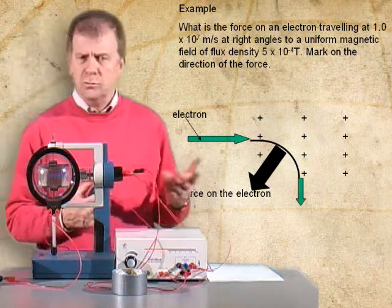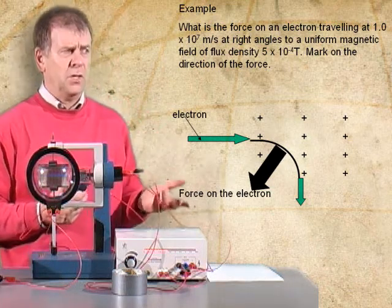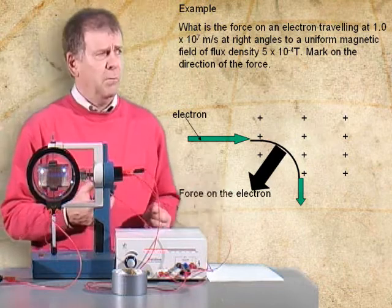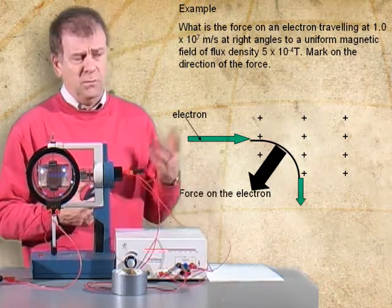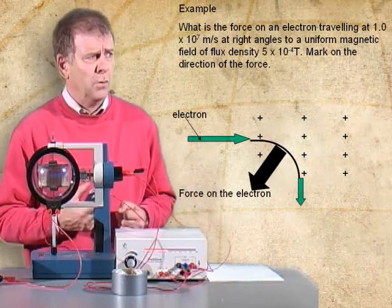So we have an electron travelling at 1 times 10 to the 7 meters per second. It's at right angles to the uniform magnetic field, which has a flux density of 5 times 10 to the minus 4.